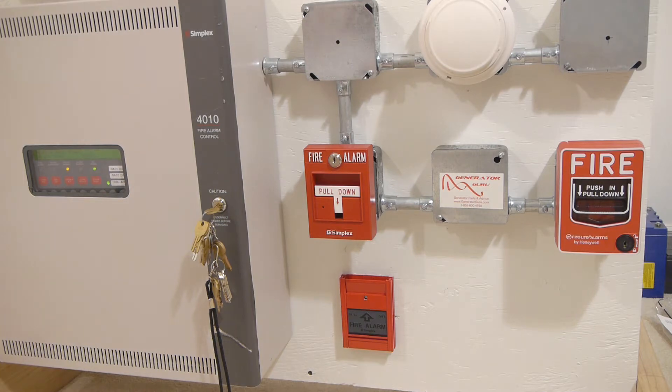In this video I'm going to be showing you how to find a ground fault on a Class B SLC loop with T-taps.